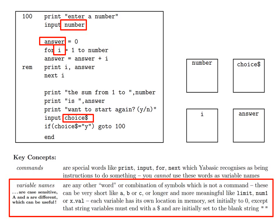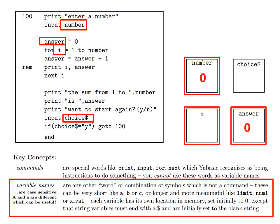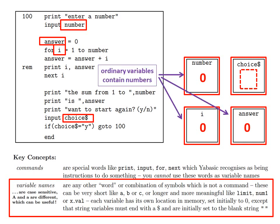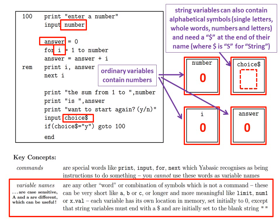So in this very simple program, number has a memory location, represented schematically by this box, which is initially set to zero. Similarly, answer is set to zero, and i is set to zero at the start of the program. Choice$, on the other hand, which is a string variable, is initially set to be just a blank. Do note that ordinary variables contain numbers, while string variables can also contain alphabetical symbols, which can be single letters, whole words, or combinations of numbers and letters. String variables need a dollar sign at the end of their name, where the dollar sign is really a capital S for string.